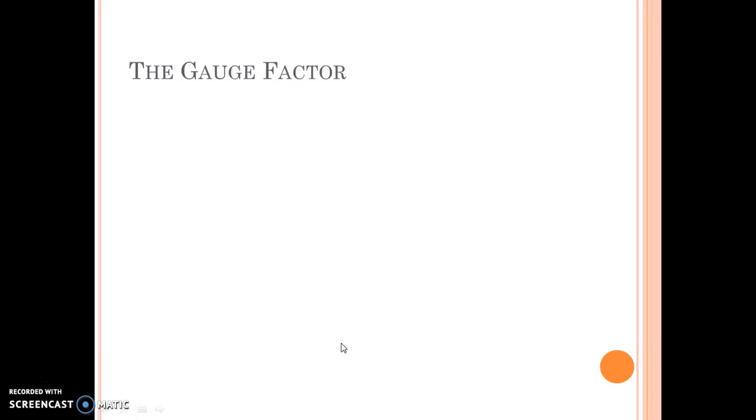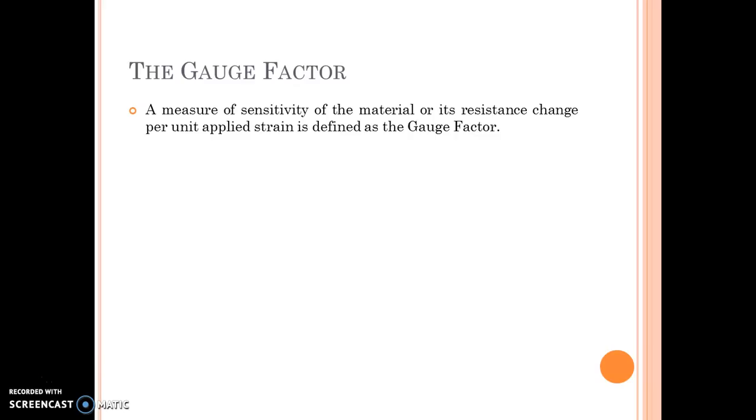Now this is something very important, the gauge factor. The measure of sensitivity of the material or its resistance change per unit applied strain is defined as the gauge factor. So in terms of a formula, it is given as gauge factor is equal to change in resistance per original resistance. So before applying any strain, if the resistance of conductor was capital R, let us assume that now there is a small change in resistance called as dR. So this is the change in resistance per unit original resistance and this is the applied strain.